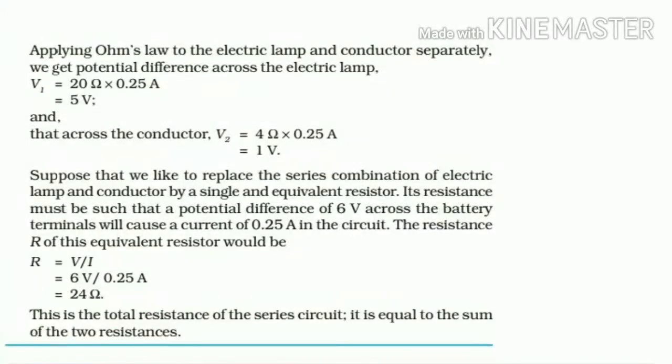You can find out the potential difference applying Ohm's law to the electric lamp and conductor separately. V1 across the lamp is 20 multiply by current. Resistance multiply current, IR equals V. So V1 is 20 multiply 0.25 equals 5 volt. And V2 is 4 multiply 0.25.